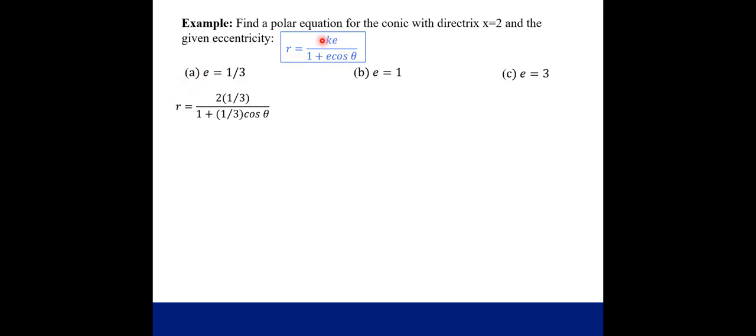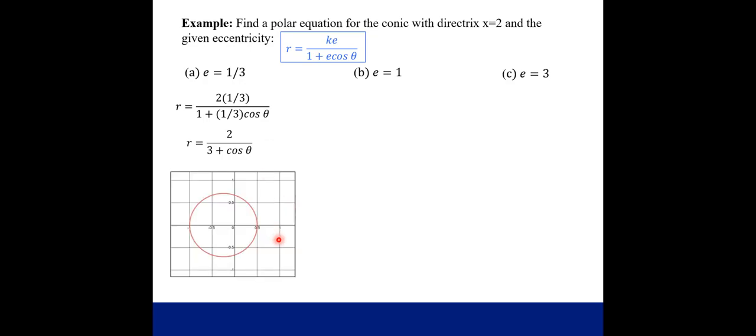K is our directrix, so x equal to, that's this number here. And then our eccentricity, we just plug in on the top here, and then also times the cosine on bottom. And then just simplify. So all I did was multiply the top and bottom by 3, and then we end up with r equals 2 over 3 plus cosine theta, and that graph looks like this. And so this is an ellipse. But like I was saying, we can tell that from before we did any work, because this eccentricity was less than 1.